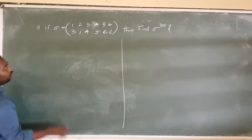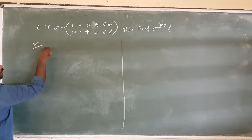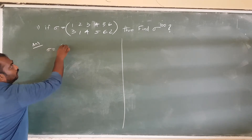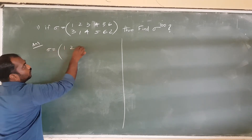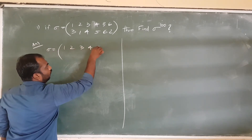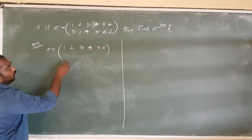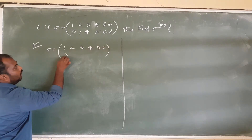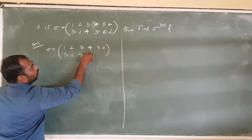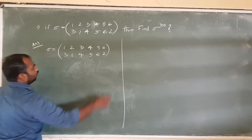Here we go. Sigma and sigma — sigma can be 1, 2, 3, 4, 5, 6. Then 3, 1, 4, 5, 6 — identity perpetuation.